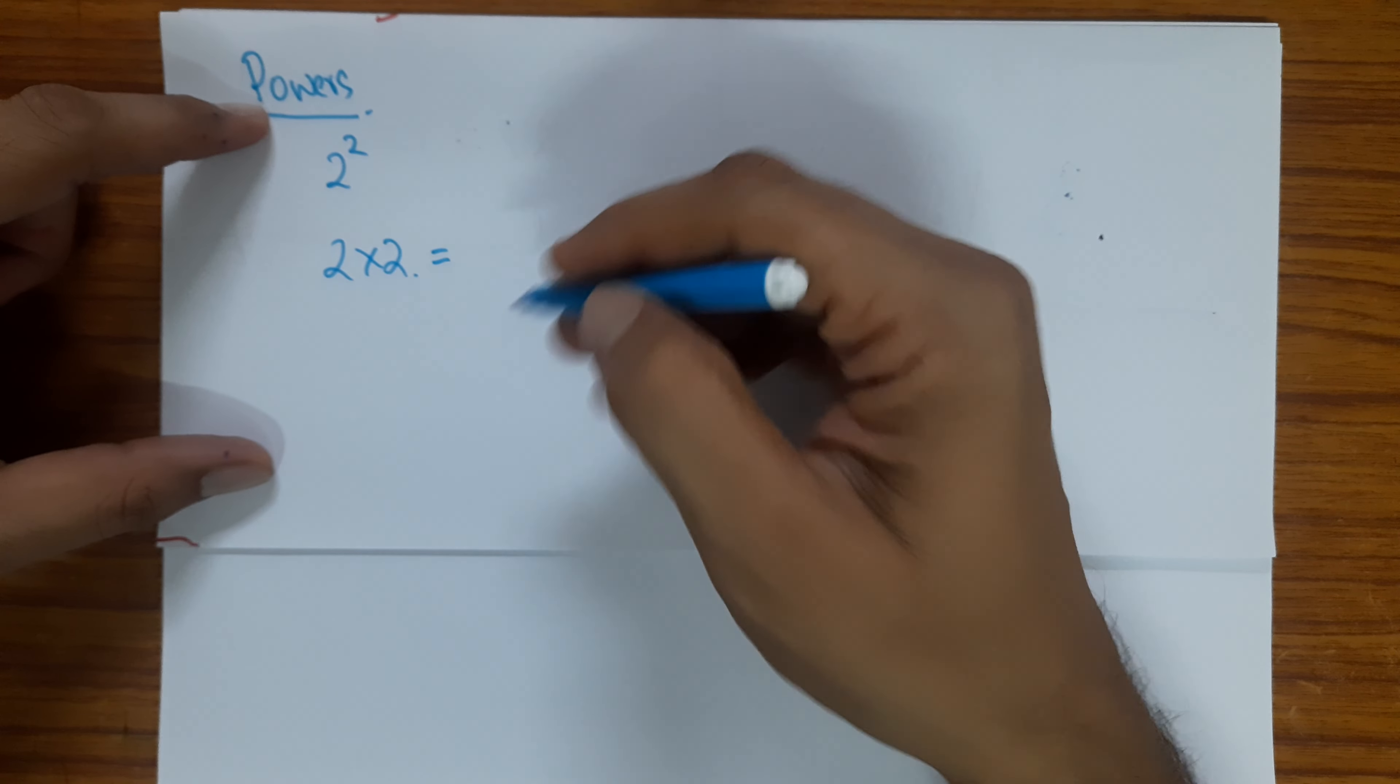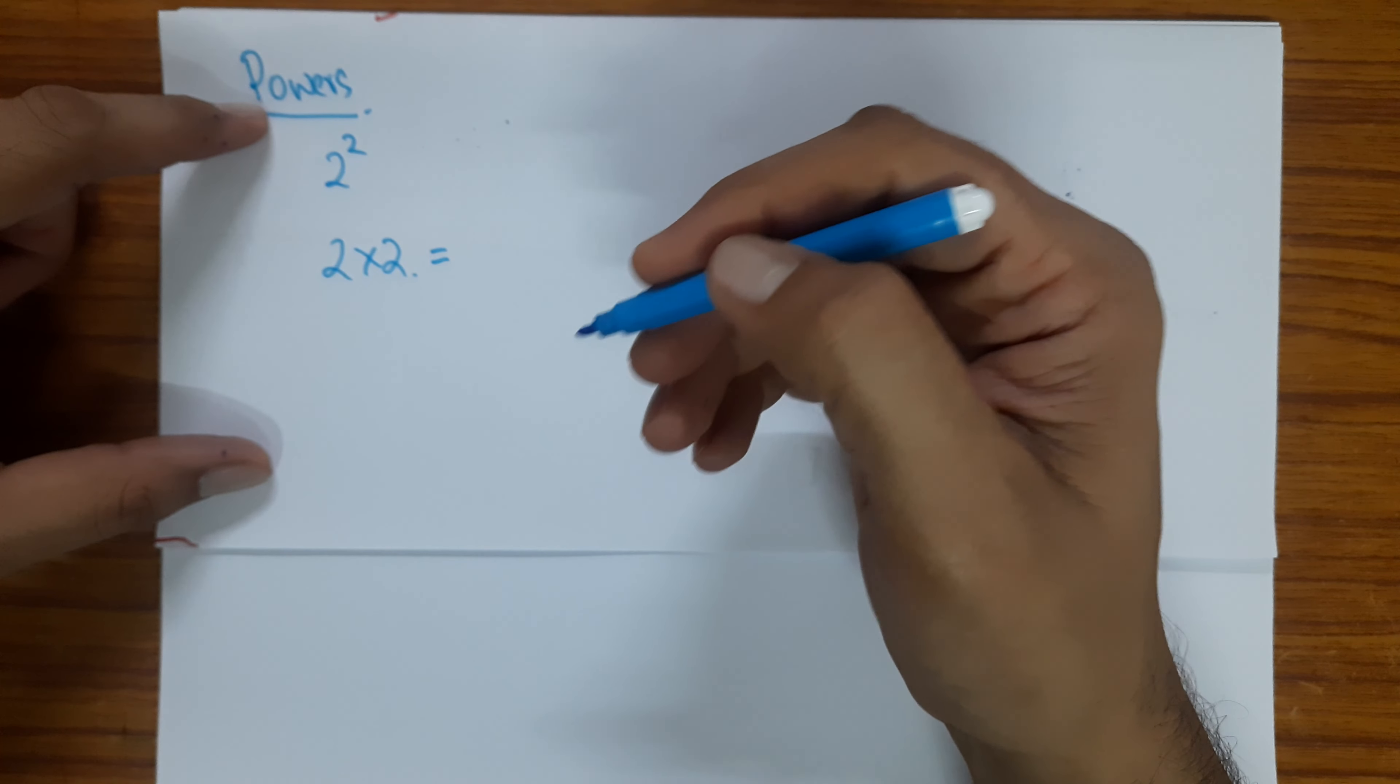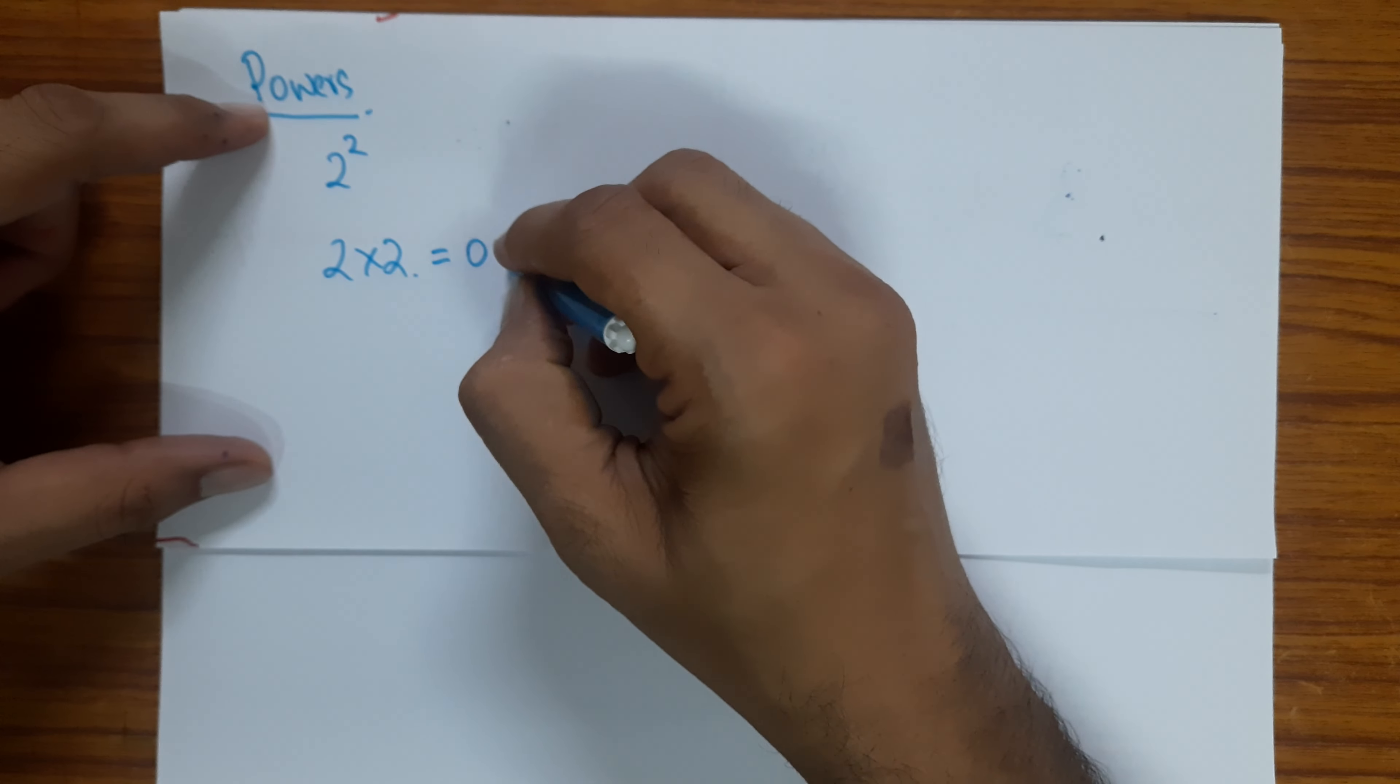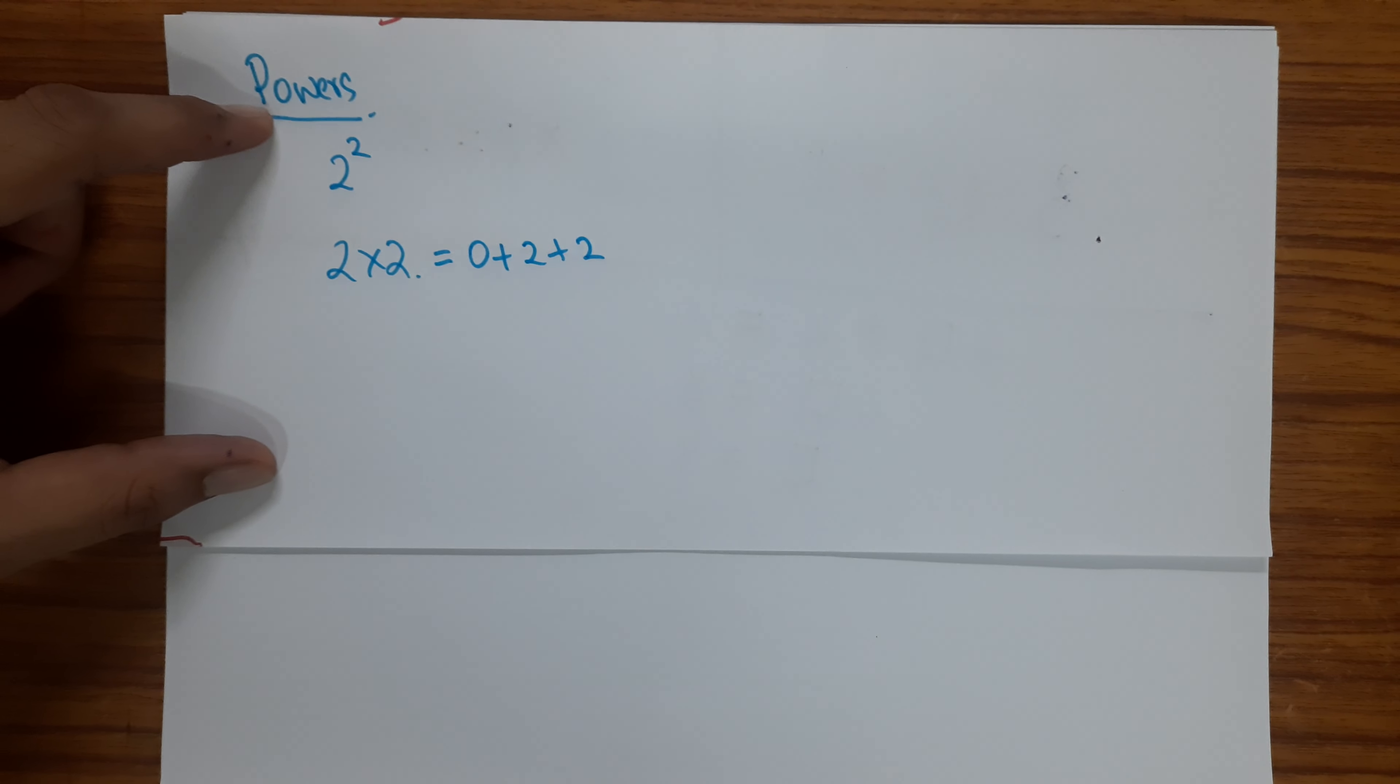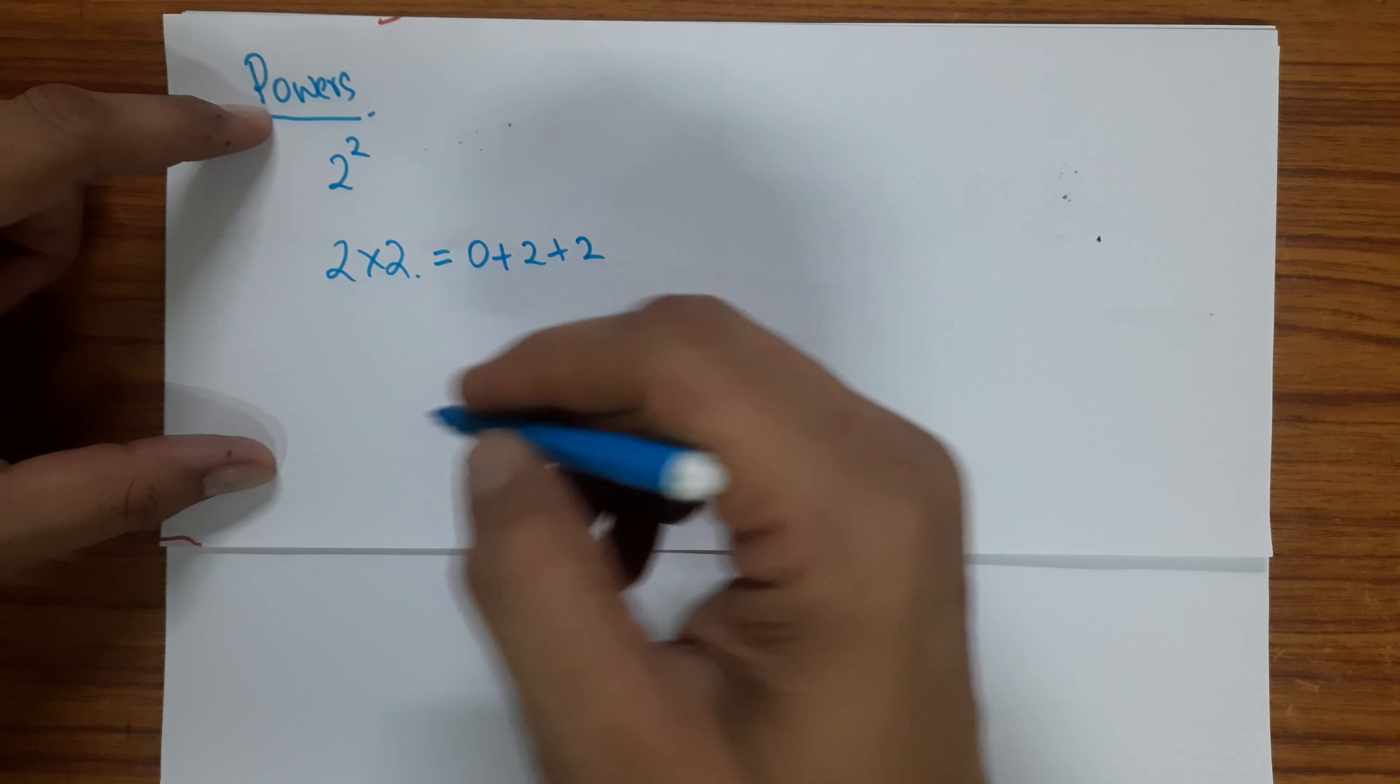Like you have the additive identity which is 0, you are going to add 2 to 0 2 times. So that's what this means, right?